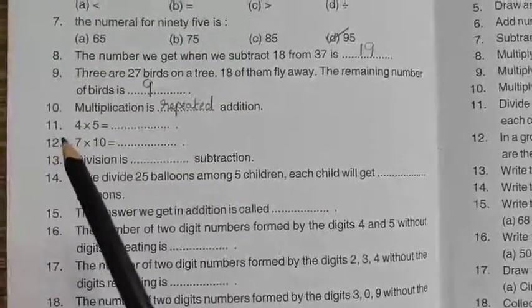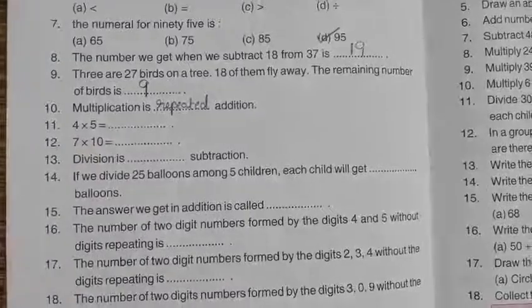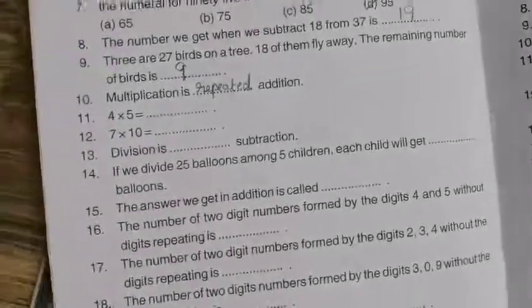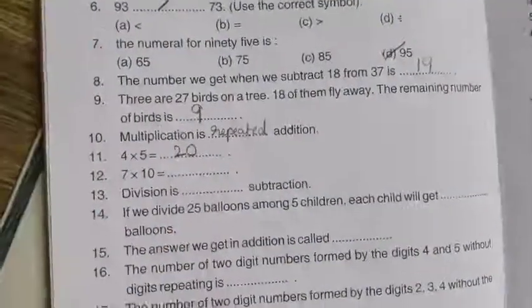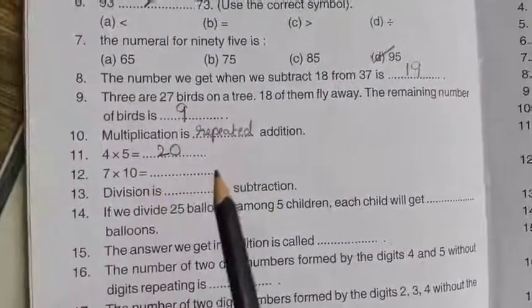Now the 11th question is 4 into 5. So 4 5's are how much children? 20, isn't it? Right, here 20. 4 5's are 20.